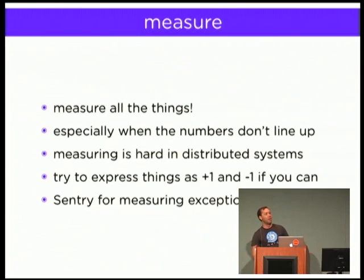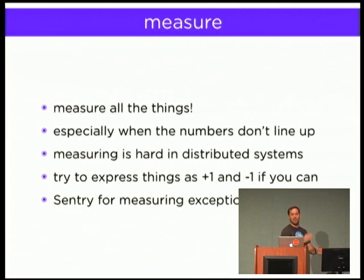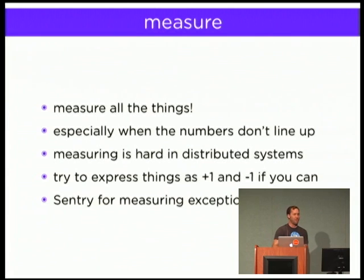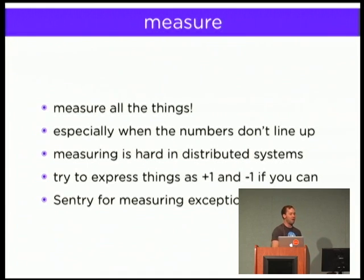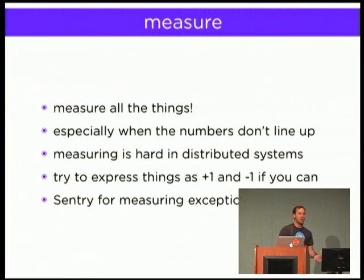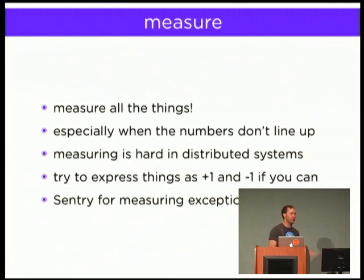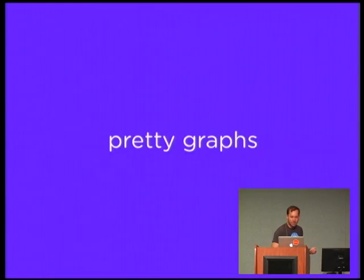Measure everything. In a pipeline system, measuring just input and output might give you wrong numbers — measure between every stage. When my code says 150 million concurrent users but HAProxy says 1.5 million, I'm going to believe HAProxy. Express your metrics as plus-ones and minus-ones — huge win in distributed systems, since combining five systems each saying 'about 50' is really hard otherwise. Also, Sentry really helped me find exceptions — it's a great product written by a former employee.